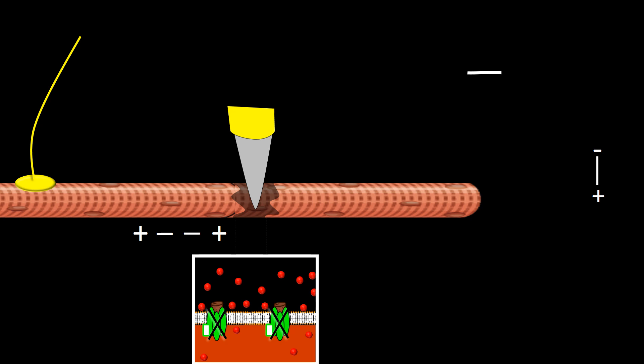The detection of the capacitance currents by the electrode will cause a down deflection of the tracing, as illustrated here.